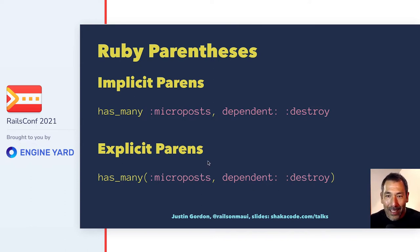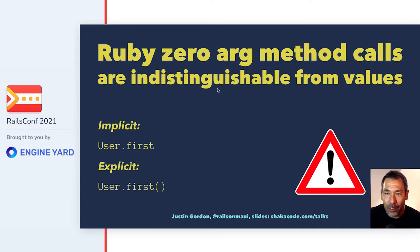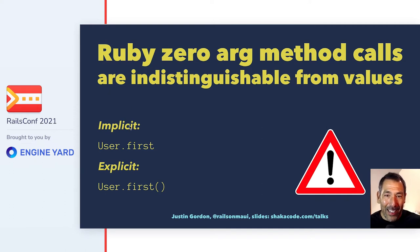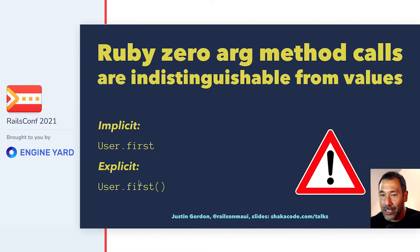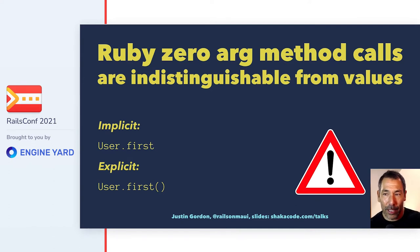Here's another critical thing in Ruby: zero-argument method calls are indistinguishable from values. `User.first` — nobody ever writes the parentheses, but if you really wanted to be explicit you could say `User.first()` just to make it clear you're actually invoking the method, which as I mentioned is really sending a message to that object.